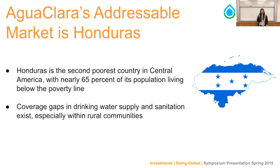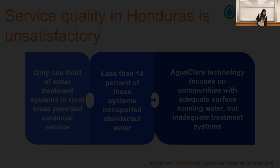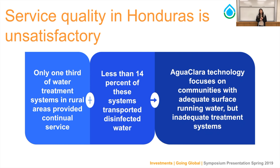Honduras is Aguaclara's current market. It's the second poorest country in Central America, with nearly 65% of its population living below the poverty line, and coverage gaps in water sanitation and supply exist especially in rural communities. According to a World Health Organization study, as of 2017, only one third of water treatment systems provide continual service in rural areas, less than 14% transport disinfected water, and a more recent study found that 70% of 43 rural water systems continue to produce water with excessive coliform counts. Aguaclara technology is well-poised to solve this problem.